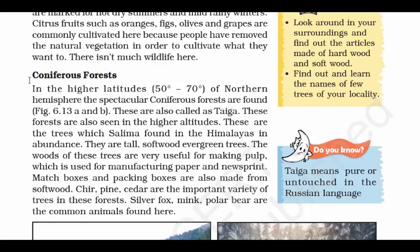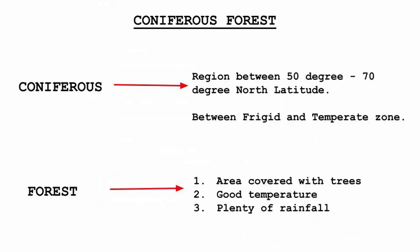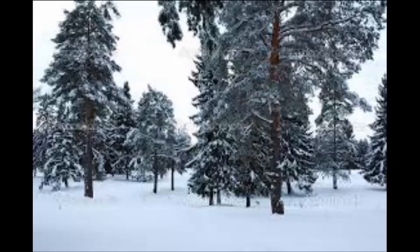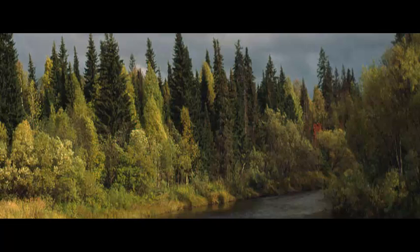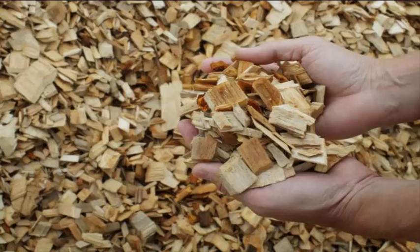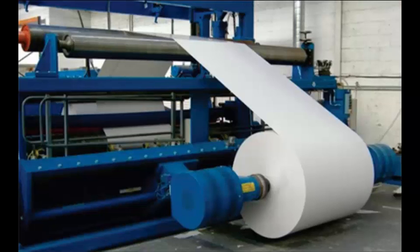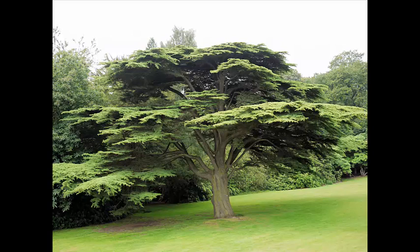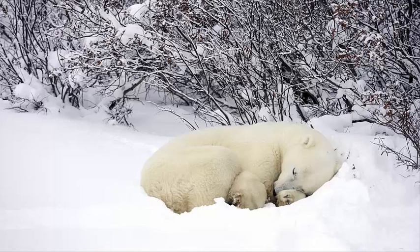Coming to Coniferous Forest. This is the region between 50 and 70 degrees north latitude, which lies between the frigid and temperate zones. The region has cold, long, snowy winters and warm, humid summers. The trees in these forests are evergreen, and the wood is very useful for making pulp, which is used for manufacturing paper and matchboxes. Common tree varieties found here include fir, pine, and cedar. Polar bears are also found in these regions. This brings us to the end of Chapter 6.